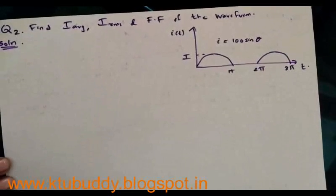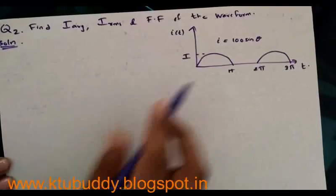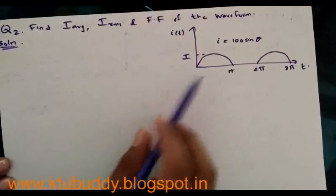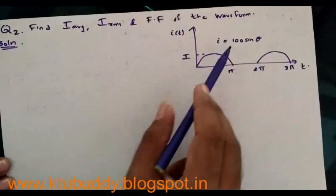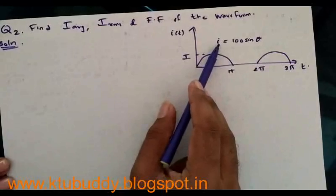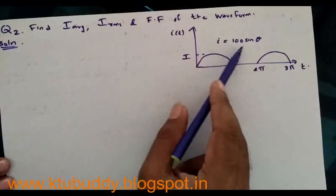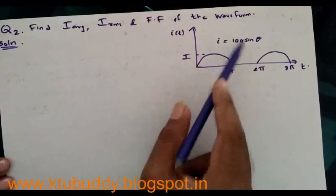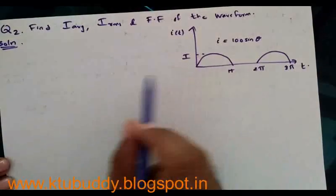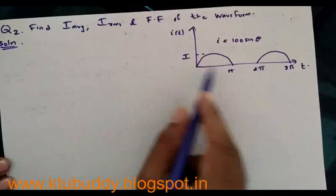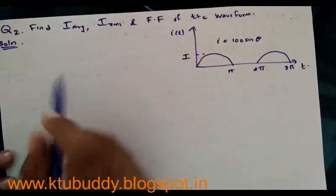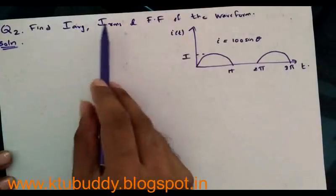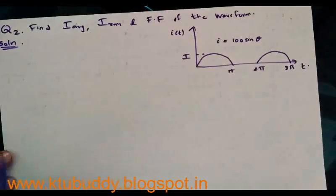This is another important problem. We have a half sinusoidal waveform where the instantaneous value i is given by i = i_max × sin(θ). This waveform is defined over 0 to 2π. We have to determine the average value (i_average), RMS value (i_rms), and the form factor of the waveform.